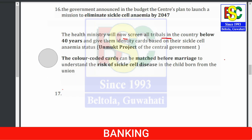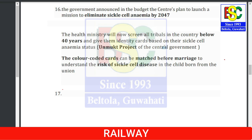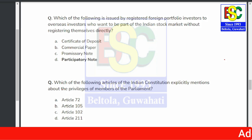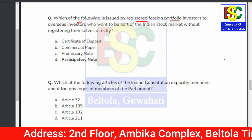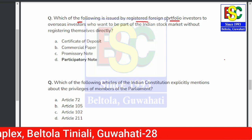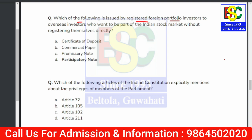Now let's solve some MCQs. First question: Which of the following is issued by registered foreign portfolio investors to overseas investors who want to be part of the Indian stock market without registering themselves directly? Options are certificate of deposits, commercial paper, promissory note, or participatory note.